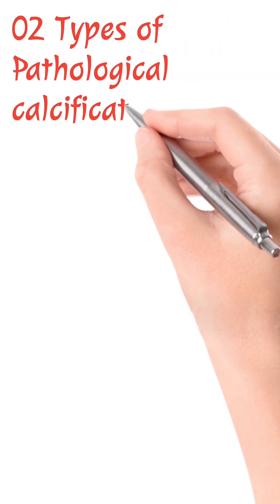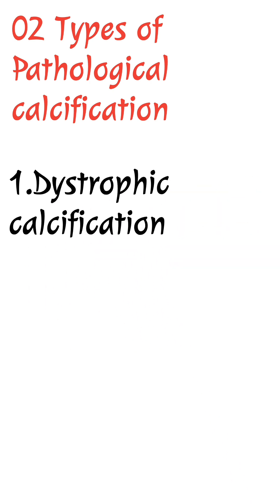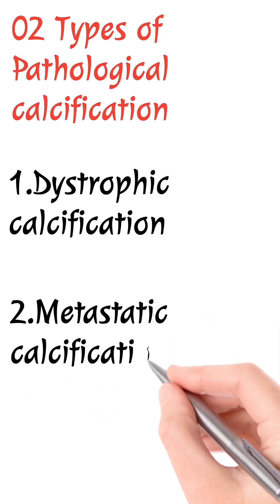There are two types of pathological calcification. It is pathological calcification of two types: one is dystrophic calcification and another one is metastatic calcification.